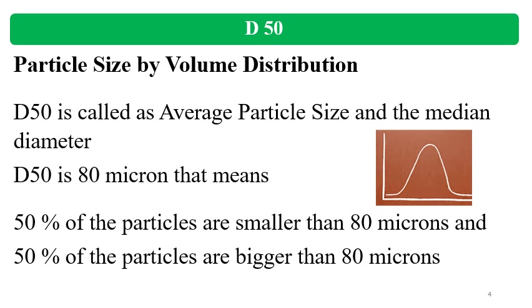D50 determines the behavior of the API. Many scientists consider D50, while some consider D90 as more predictive — this is based on the criticality of the particle size and real-time experience for the specific product or API. A 3-tier specification is required for any API for PSD specification: D10, D50, and D90. Sometimes D100 is also considered. So D50 means the average particle size — in this example, 80 microns.